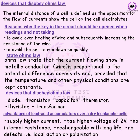The definition of internal resistance of a cell: the internal resistance of a cell is the opposition to the flow of current through the cell or the cell electrolyte. The reason why the key in the circuit should be open when not taking readings is to avoid overheating of the wire and increasing its resistance, and also to avoid the cell from running down quickly.